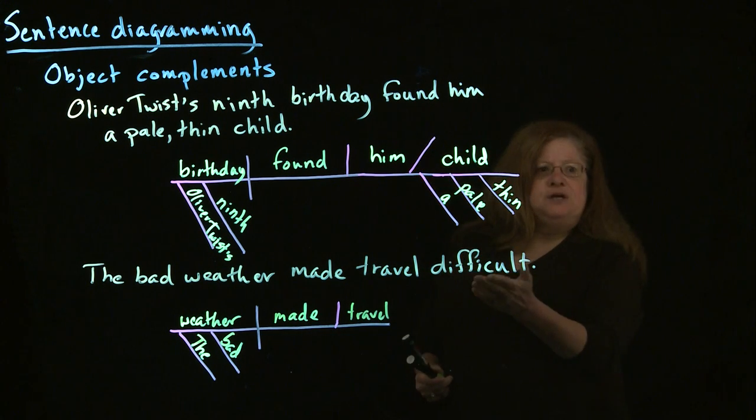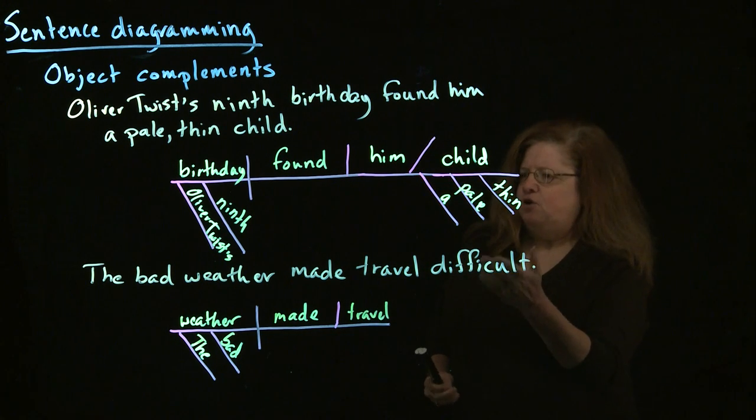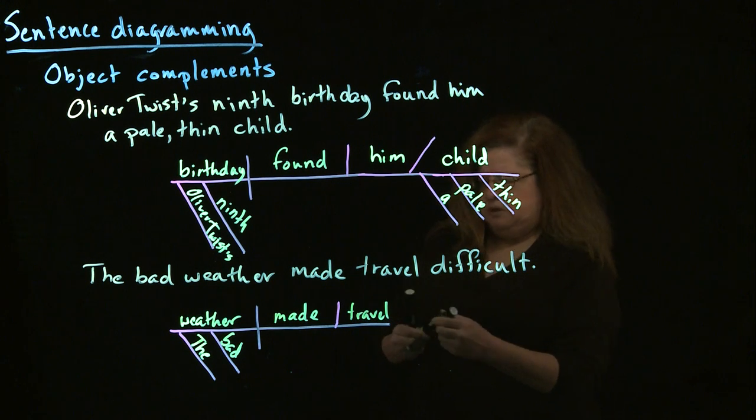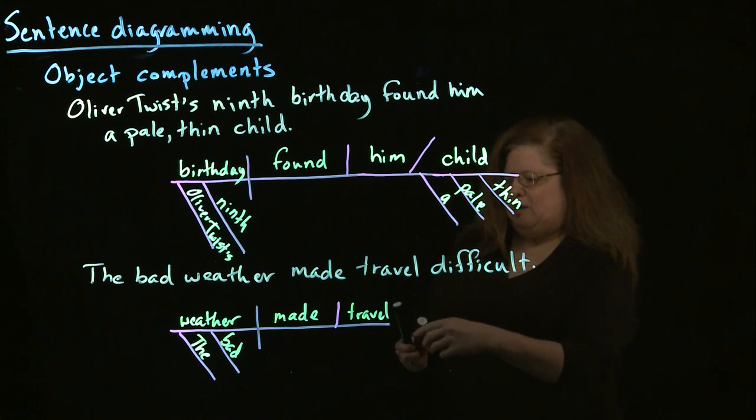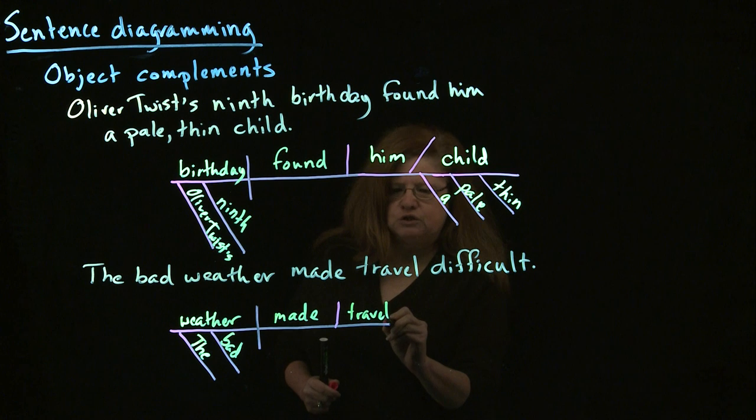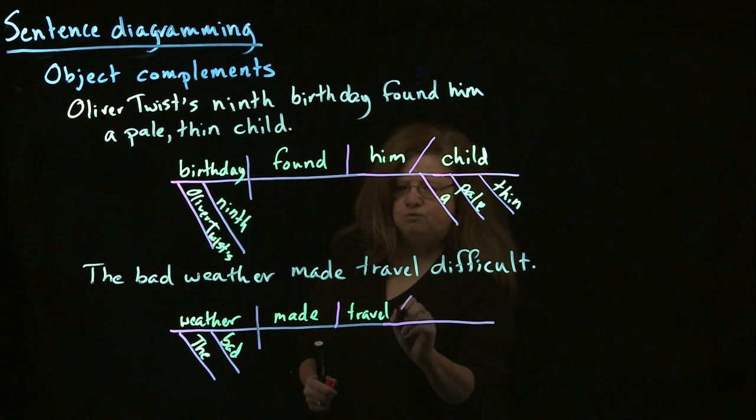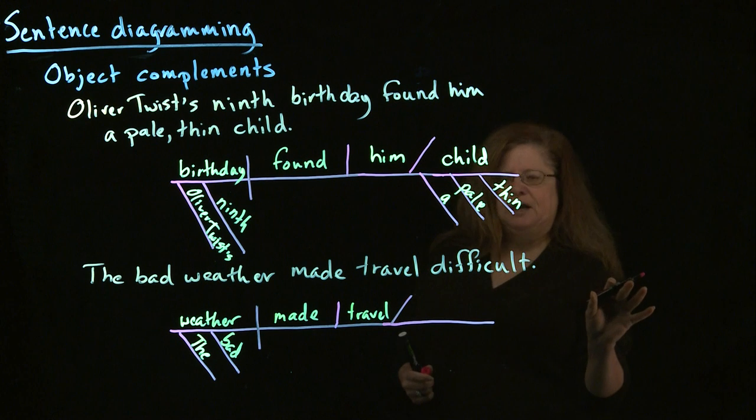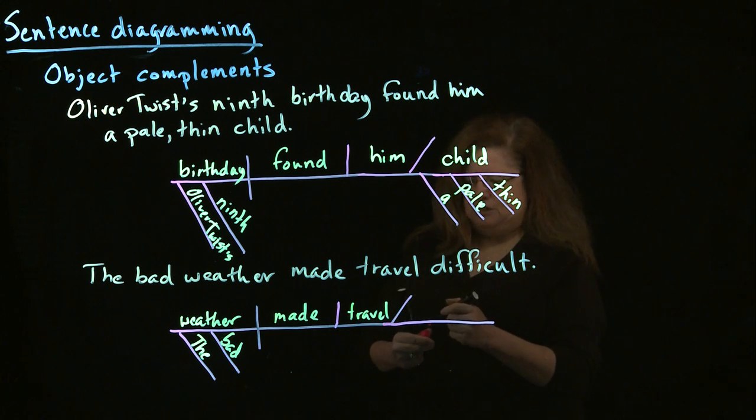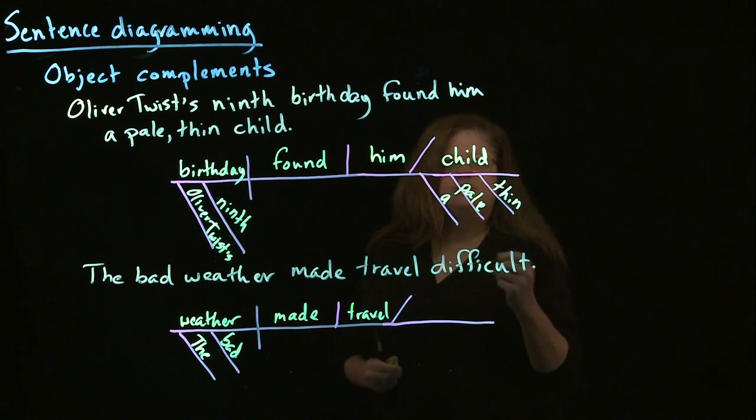And then, finally, we have the word difficult, which in this case is describing travel. So, it's describing the object of the sentence. So, we're going to put it at the end here. Again, with a slash toward the right hand end of the sentence. The back end of the sentence. To show, this is modifying the object of the sentence.